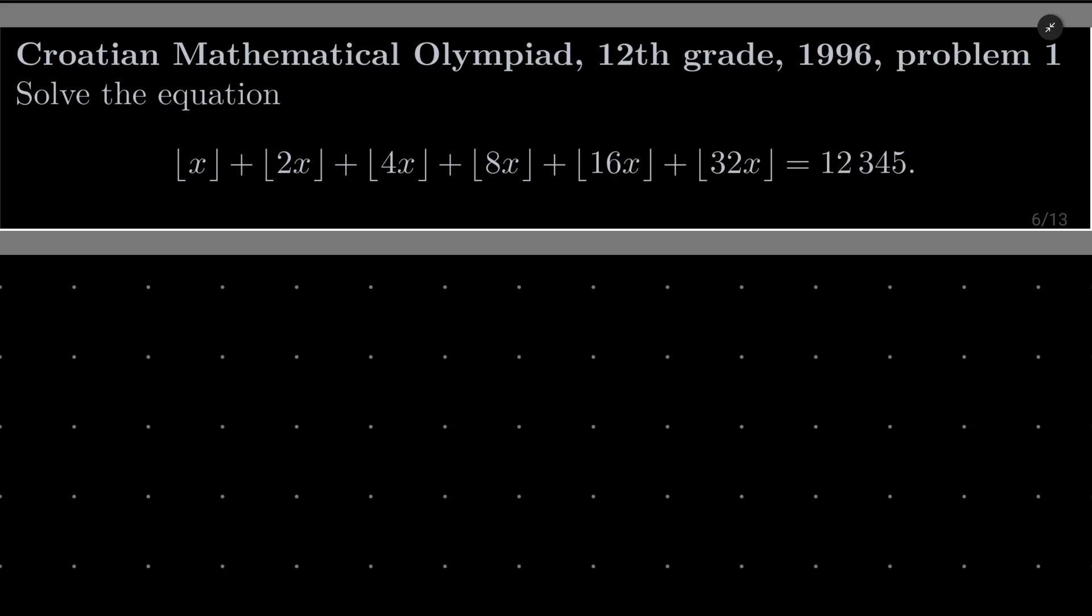We wish to solve the following equation: floor of x plus floor of 2x plus floor of 4x plus floor of 8x plus floor of 16x and finally plus floor of 32x equals 12,345.